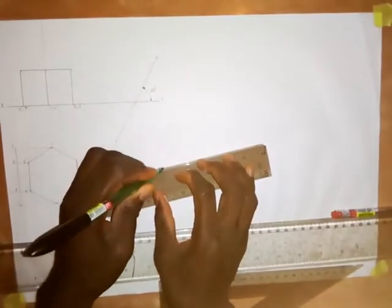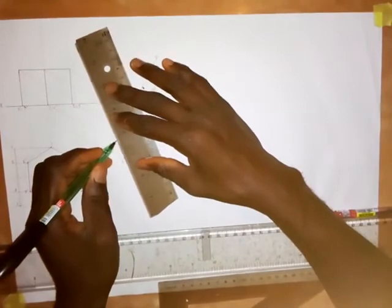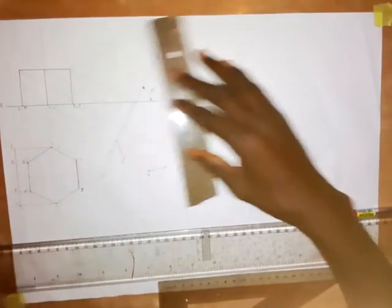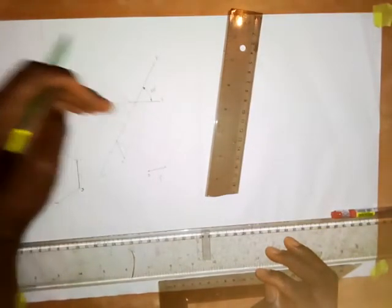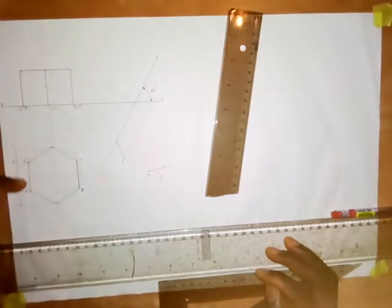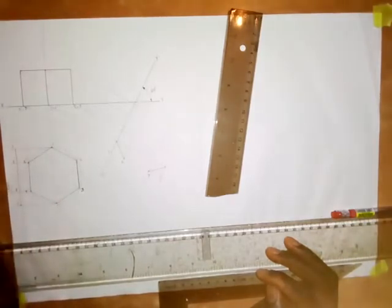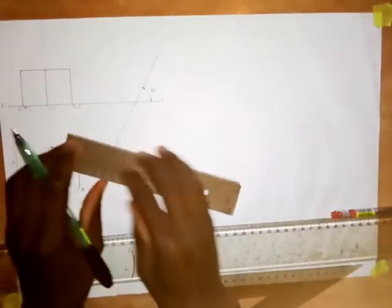So join this together with a straight line, then join this together with a straight line. This object is being viewed in this direction, so when I am looking at the object in this direction, I will see this line, I will see this line, and I will see this line — very clear. I am looking at the object in this direction, so that is what we are doing.